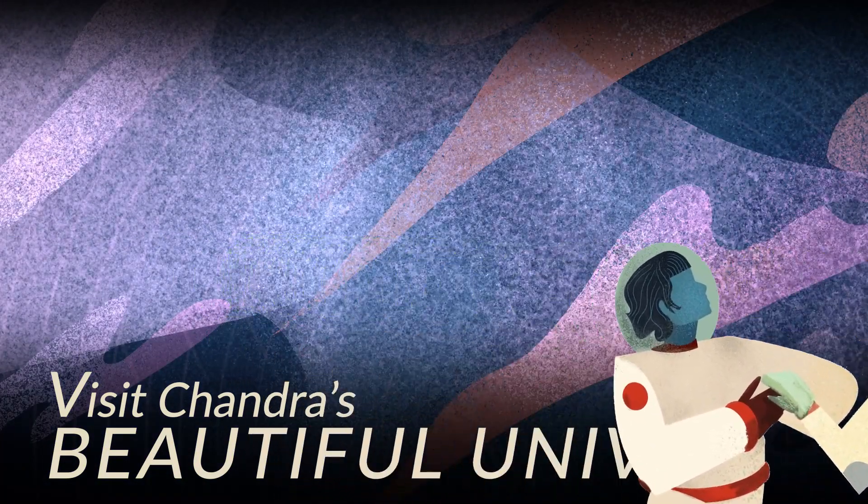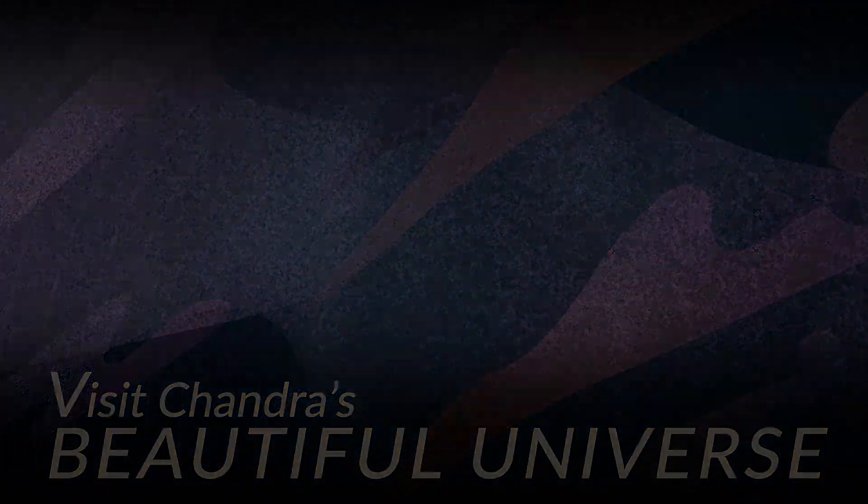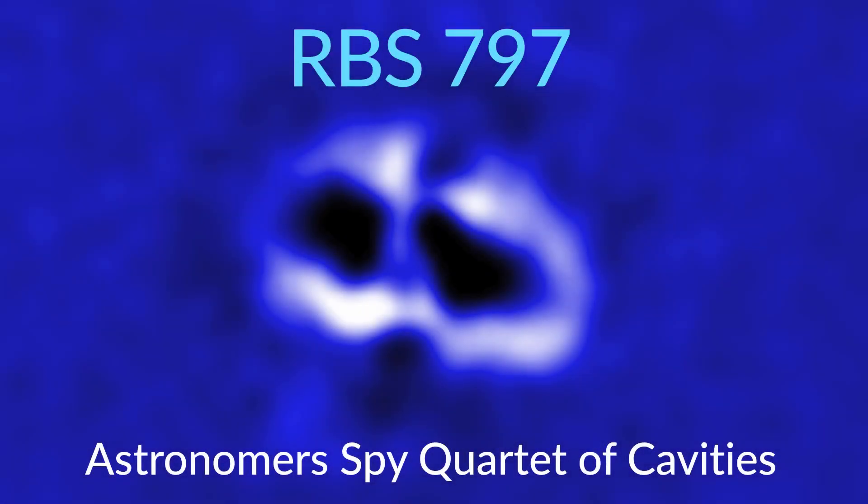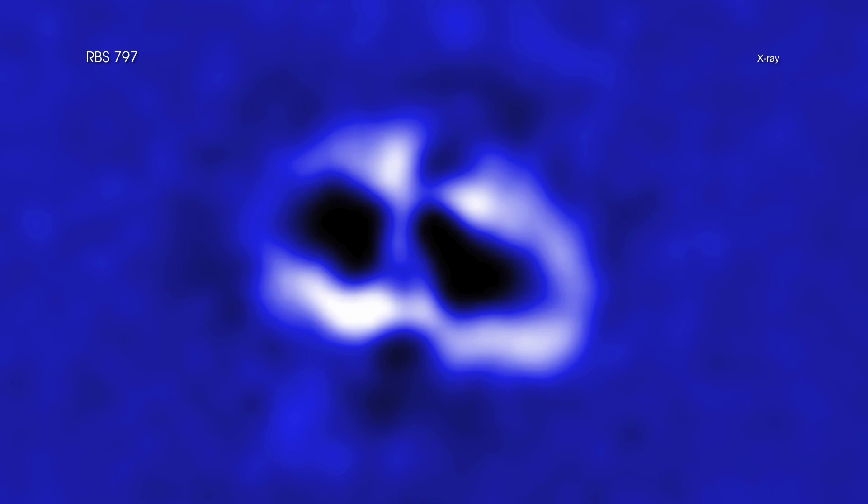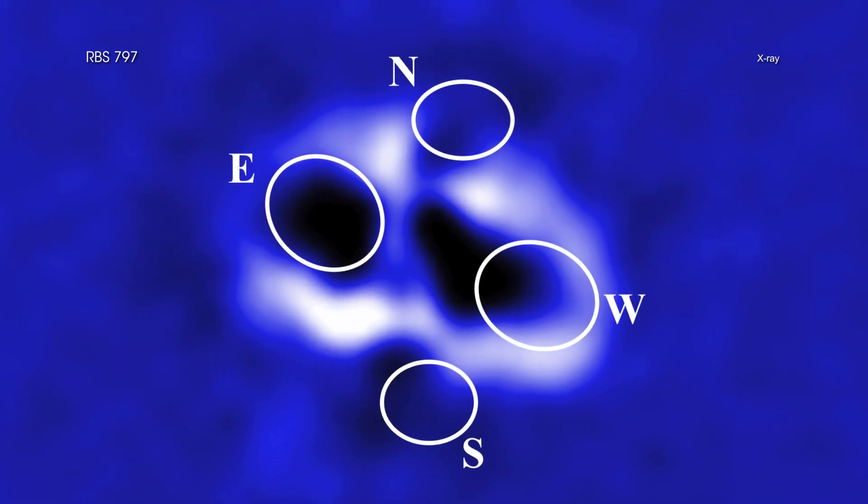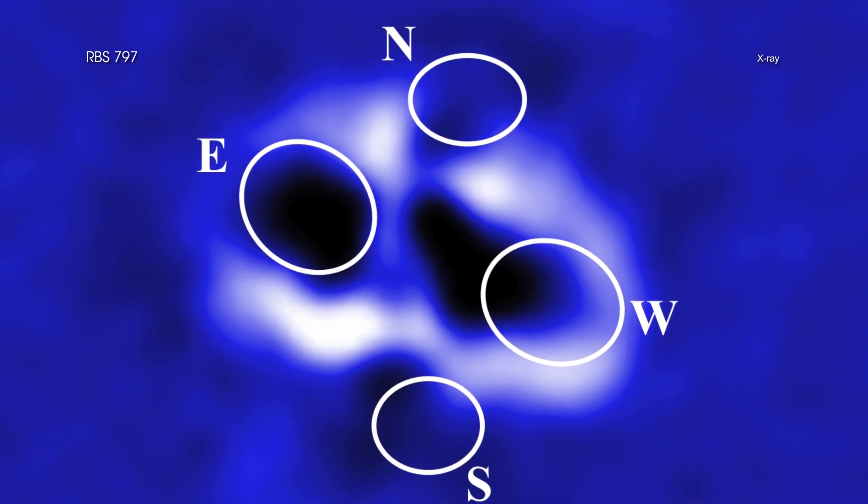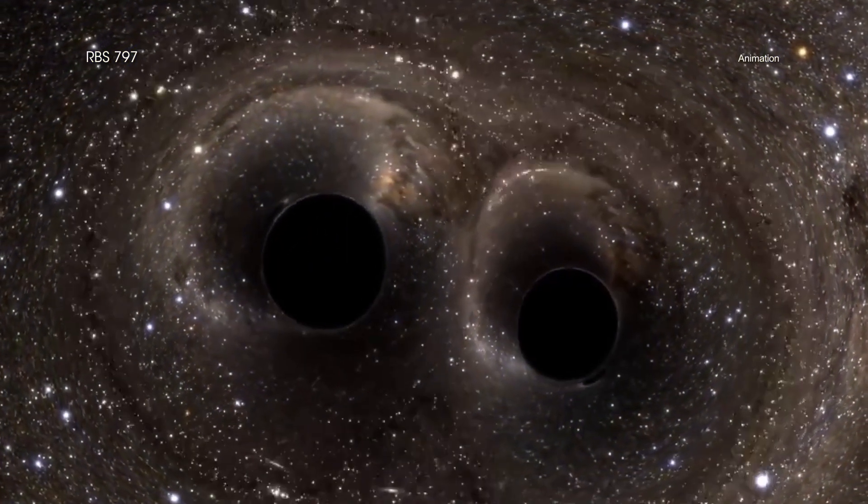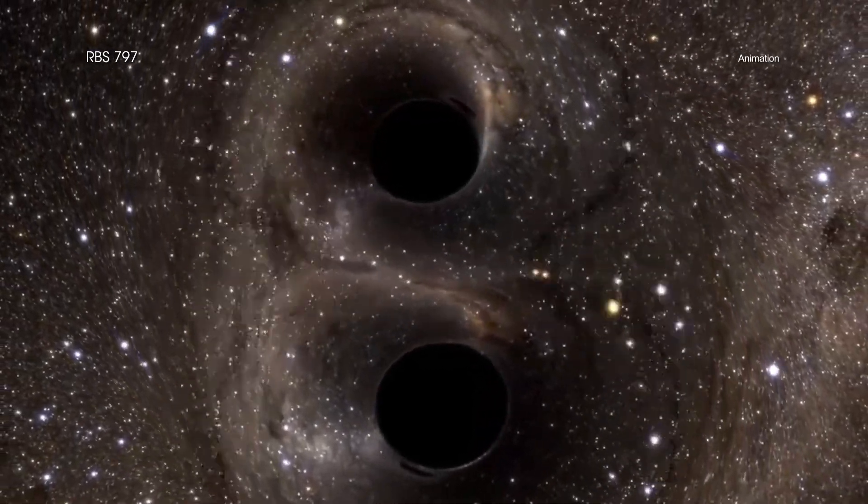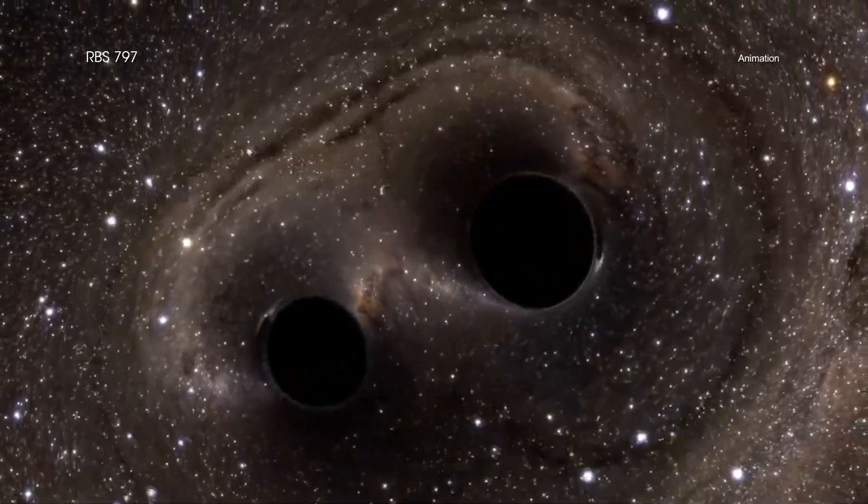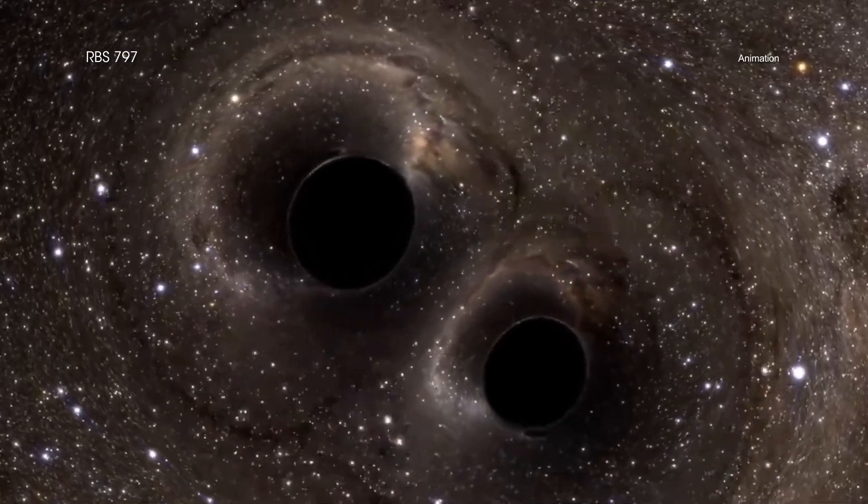Visit Chandra's Beautiful Universe. RBS 797. Scientists have found four enormous cavities, or bubbles, at the center of a galaxy cluster using NASA's Chandra X-ray Observatory. This unusual set of features may have been caused by eruptions from two supermassive black holes closely orbiting each other.